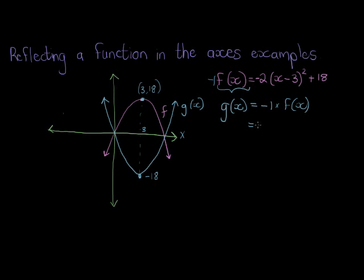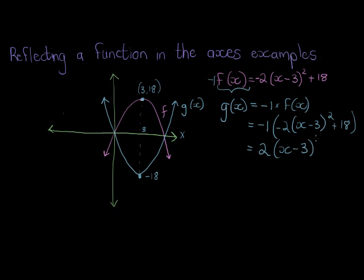Now we know f(x) is this whole expression: negative 2 times (x minus 3) squared plus 18. Multiplying in that negative now gives me positive 2(x minus 3) squared. Notice how the x value or the symmetry axis is still the same, and the plus 18 becomes negative 18 as I distribute the negative 1. That's exactly what I see here — it used to be a maximum of 18, now it's a minimum of negative 18.